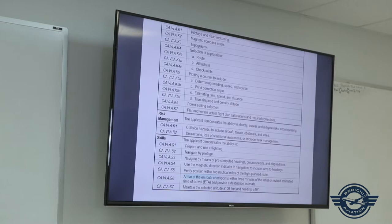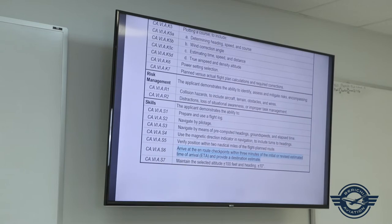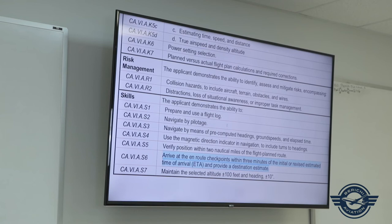Skipping to page 39, navigation and area of operation six — pilotage and dead reckoning. The standards are now plus or minus 100 feet and heading plus or minus 10 degrees. Arriving at en-route checkpoints within three minutes is also required. We discussed how to get the airplane on course out of an uncontrolled airport, out of Class D, C, or Bravo airspace, and choosing identifiable ground checkpoints outside those areas within 15 miles.